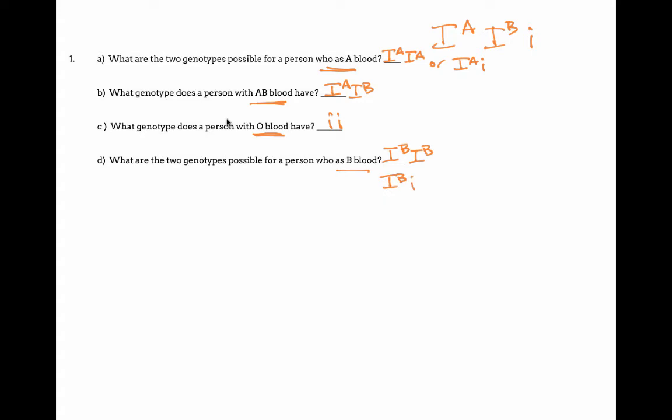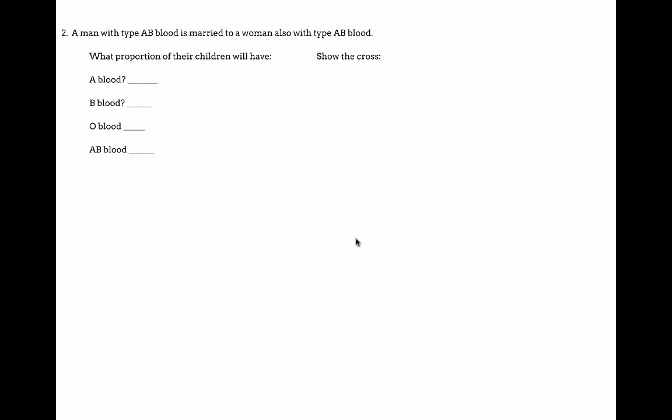Okay, so once you have that down, now you can work a couple practice problems. So this person says we have a man with type A and a woman with type AB. So that means his genotype has to be I^A I^B.